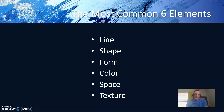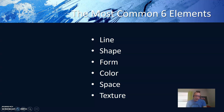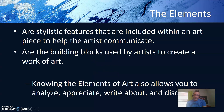The most common six elements of art that you'll find in any art history course or online will be line, shape, form, color, space, and texture. Please note that I have added videos to the art history video playlist that go over specifically each one of these in more detail. Please check those out if you haven't already.